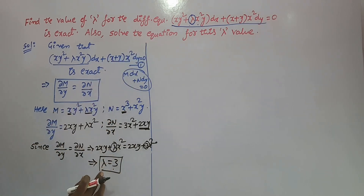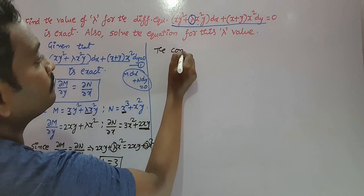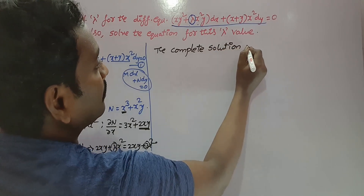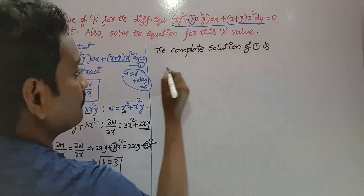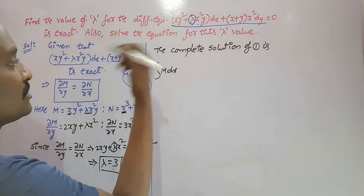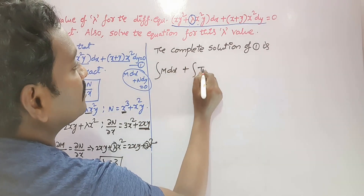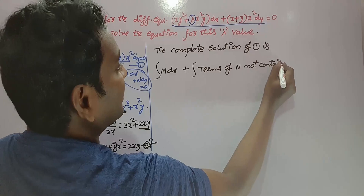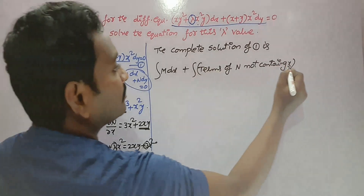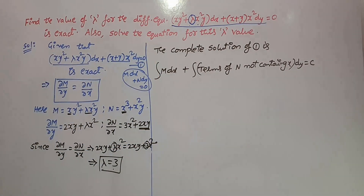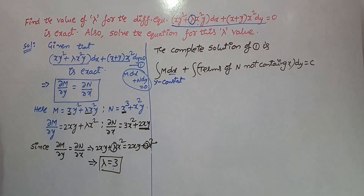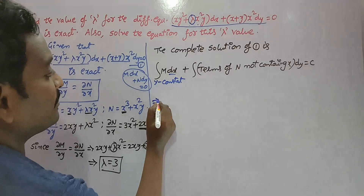This is the first part. Now we have to solve the given equation for this lambda value. The complete solution of an exact equation is: integral of M dx plus integral of terms of N not containing x, whole into dy, is equal to c. Replace all values — and importantly, in the first integral, y should be treated as constant.